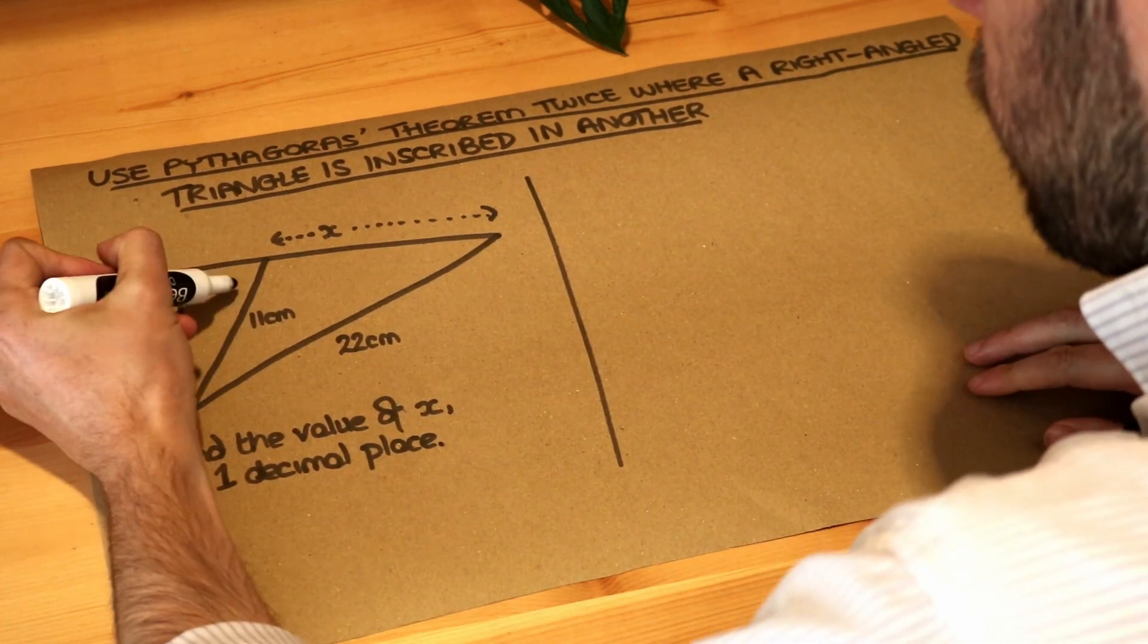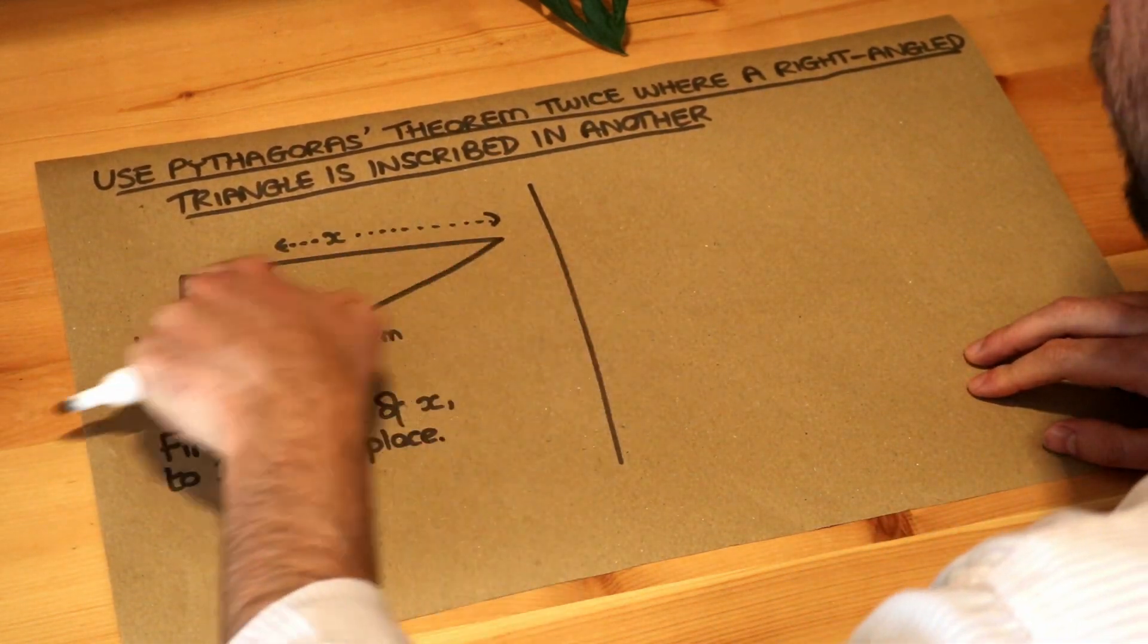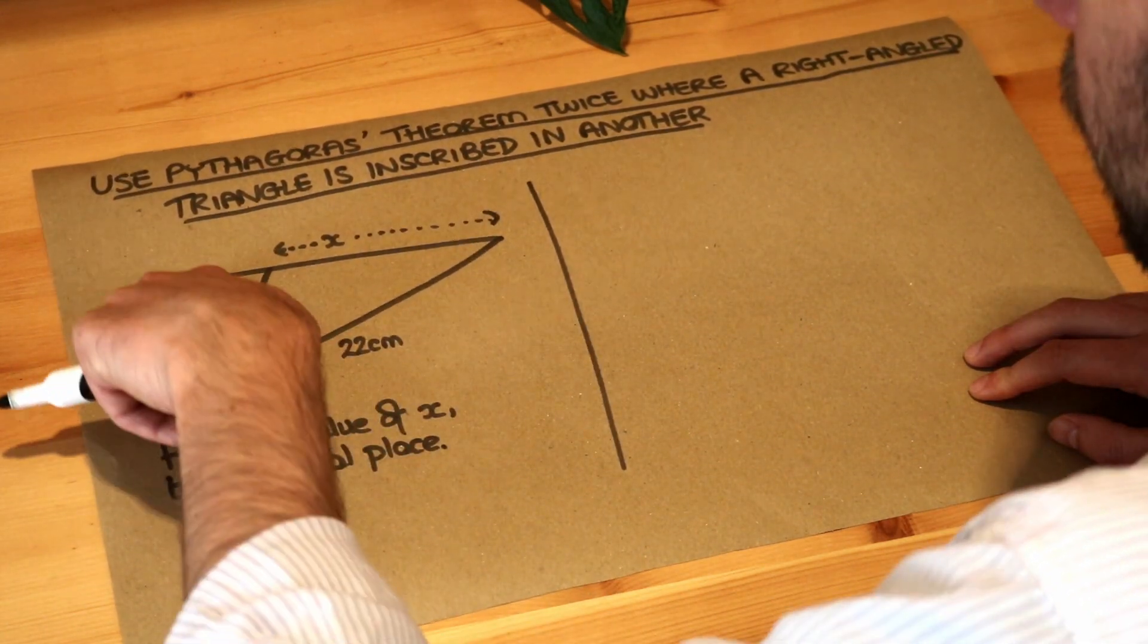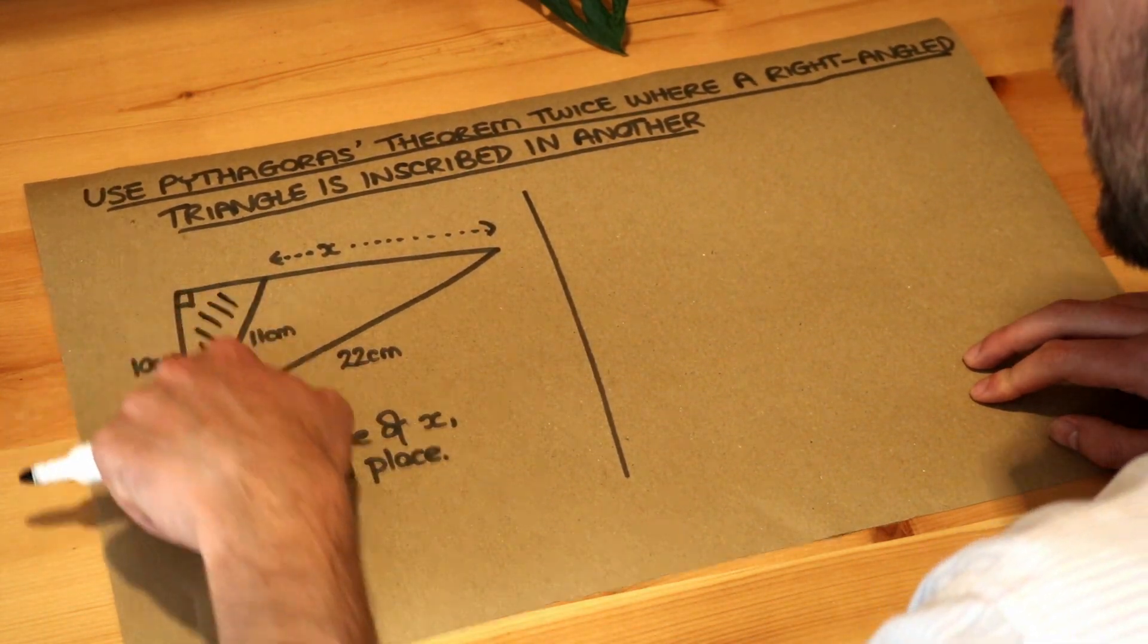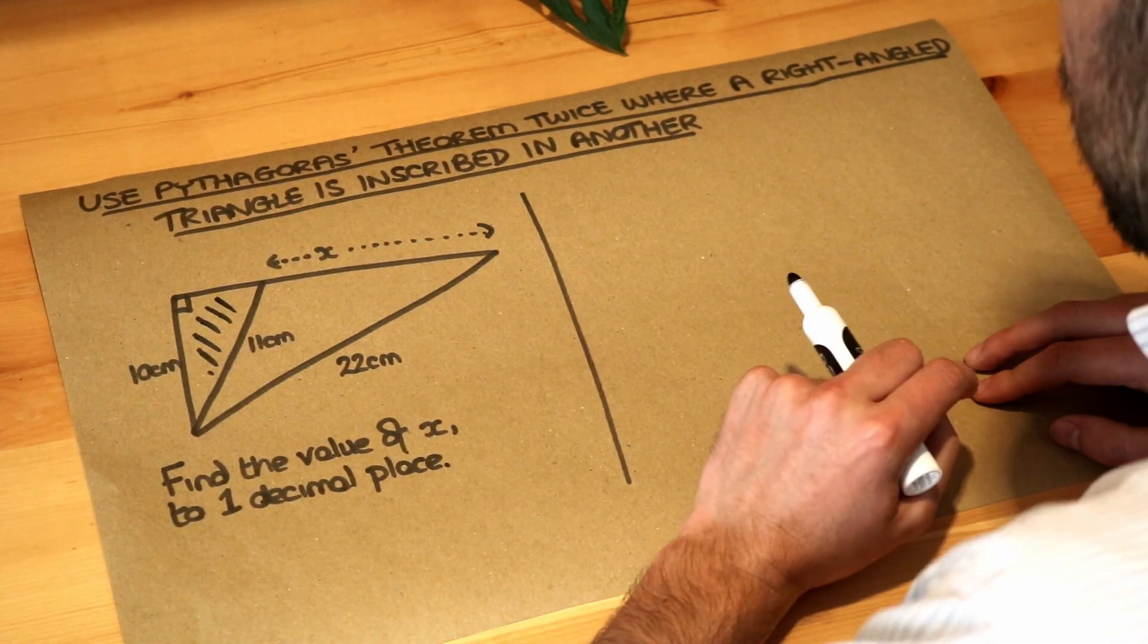So we can see we've got a right-angled triangle here and that's inside a larger right-angled triangle. This triangle here is not right-angled, but the whole thing is a right-angled triangle because it's got a right-angle there and this triangle inside it, we could say inscribed inside it, is also a right-angled triangle.